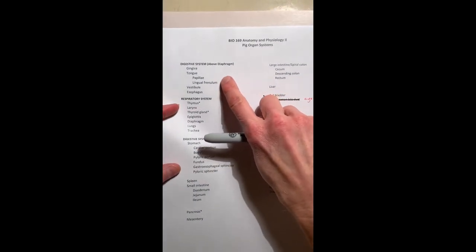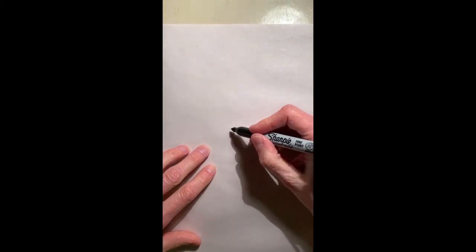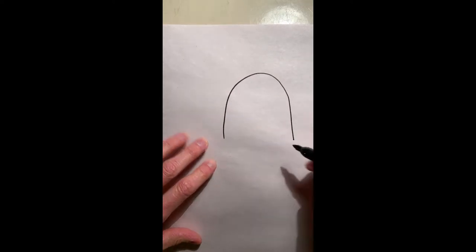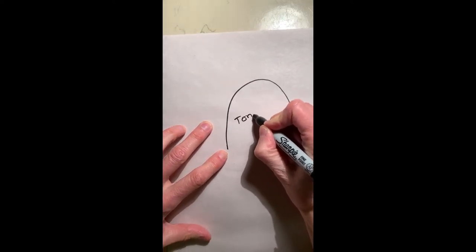This is the part of the list that we're tackling right here in a drawing. First thing on your list is gingiva, and I'm going to draw that in just a minute. I think the first thing we're going to look at is the tongue because that's a great marker. You can always tell where you are when you're looking at the tongue.